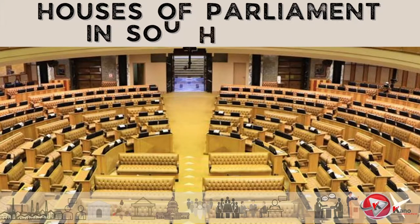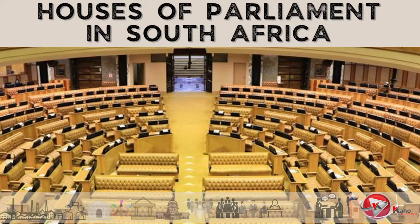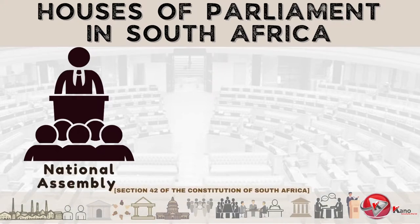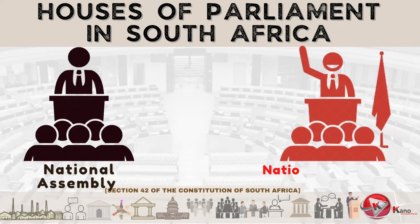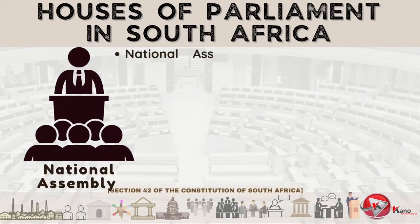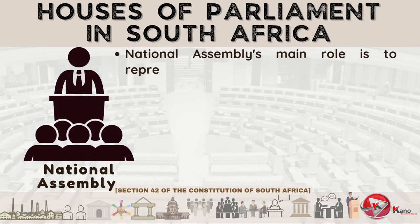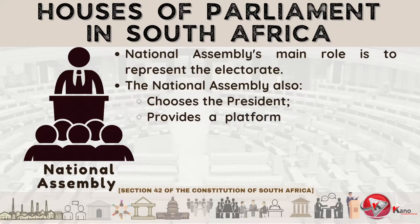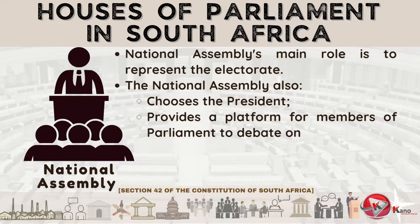Parliament is made up of two Houses: namely, the National Assembly and the National Council of Provinces, also known as the NCOP. The National Assembly's main role is to represent the electorate. The National Assembly also chooses the President, and provides a platform for members of Parliament to debate on critical issues which affect the country.